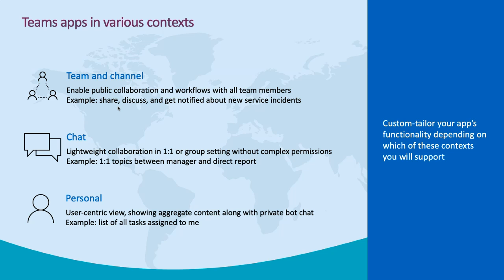For personal scope, only an individual can interact with the bot — for instance, a bot that tells you the tasks assigned to you. You can also have a chat scope, which means it exists in a group setting with one-to-one collaboration. The scope is greater than personal. And you can also enable a bot that interacts with all the team and all the channel — the biggest scope.